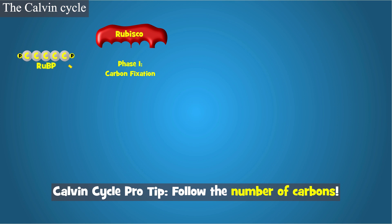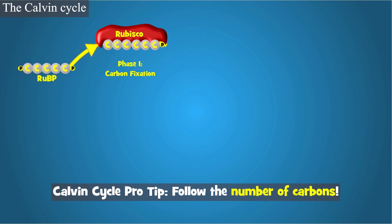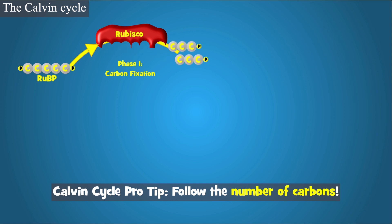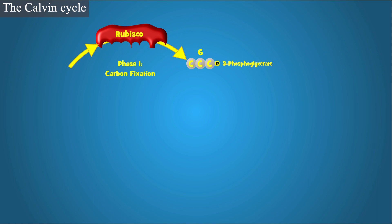Phase 1: Carbon Fixation. An enzyme called rubisco takes CO2 from the air and adds it to a 5-carbon compound called RuBP. This is called carbon fixation. This makes a 6-carbon compound that immediately splits in half to make two molecules of 3-phosphoglycerate. Notice that we did carbon fixation for three molecules of CO2 — you will see why soon.